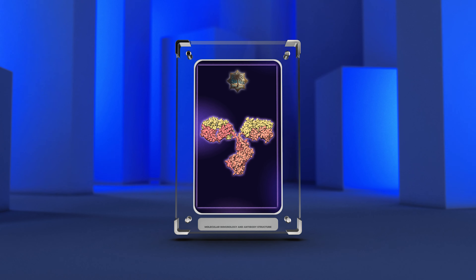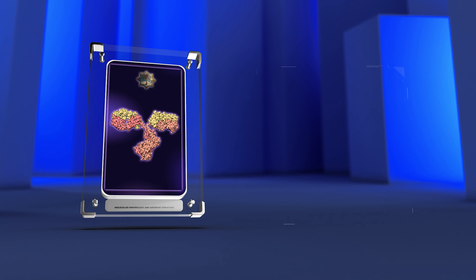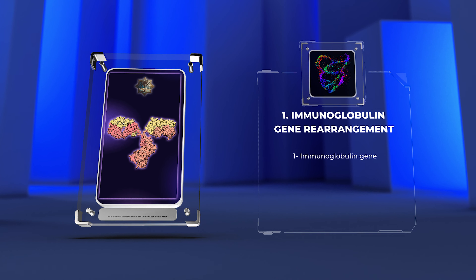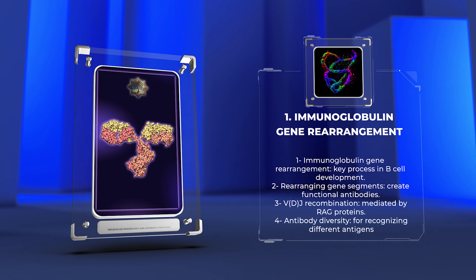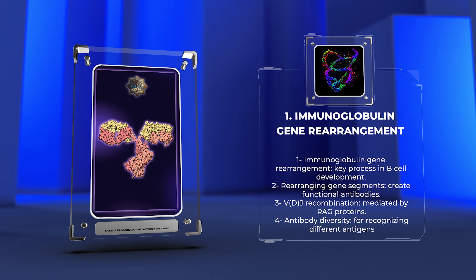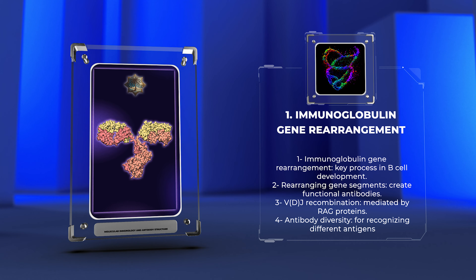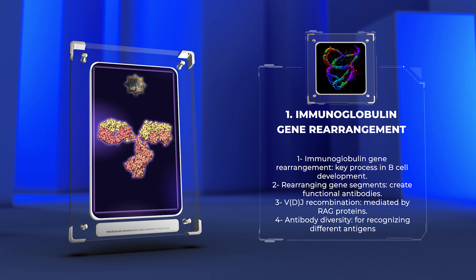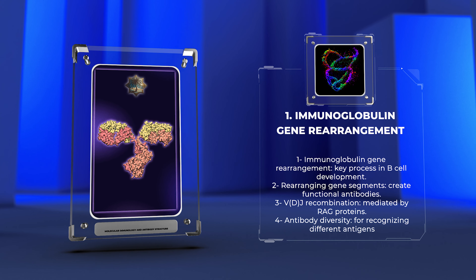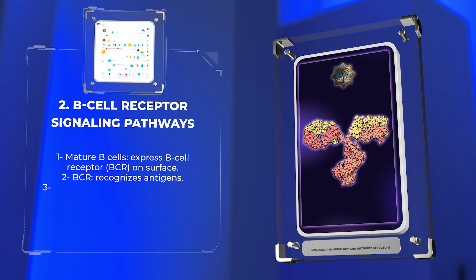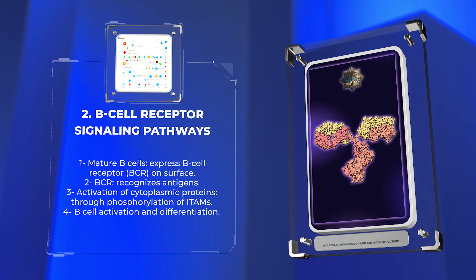We will cover a wide range of topics providing a comprehensive understanding of molecular biology's role in immunology. Immunoglobulin gene rearrangement is a key process in B cell development, involving rearranging gene segments to create functional antibodies. This process, known as VDJ recombination, is mediated by RAG proteins and contributes to antibody diversity for recognizing different antigens.